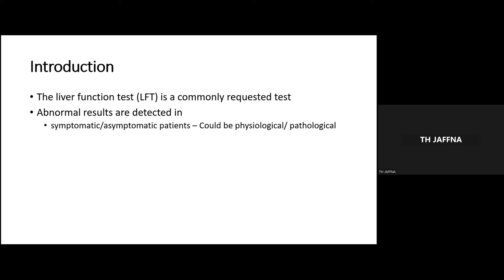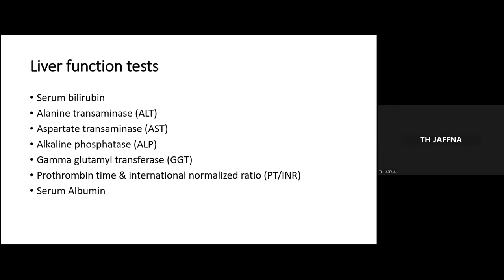The liver function test is a commonly requested test. Abnormal results are detected in symptomatic or asymptomatic patients. The abnormal liver function test could be physiological or pathological. Available liver function tests are serum bilirubin, liver enzymes — alanine transaminase, aspartate transaminase, alkaline phosphatase, gamma glutamyl transferase — prothrombin time and international normalized ratio, and serum albumin levels.